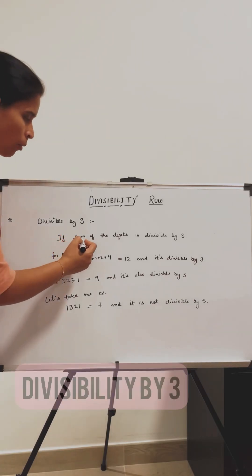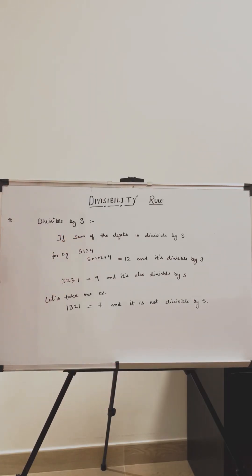If the sum of the digits is divisible by 3, then the number will be divisible by 3.